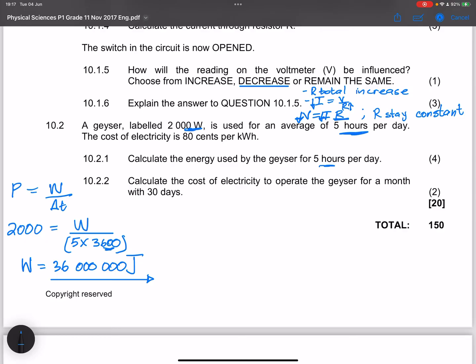All right, and then finally, ladies and gents, they want us to calculate the cost of electricity to operate the geyser for a month with 30 days. Right, so now we know that we're going to say the cost is going to be the rate per kilowatt hour multiplied by the amount of energy that is dissipated over that time. So in this case, the rate, we said this was 0.8 multiplied by the energy in kilowatt hours.